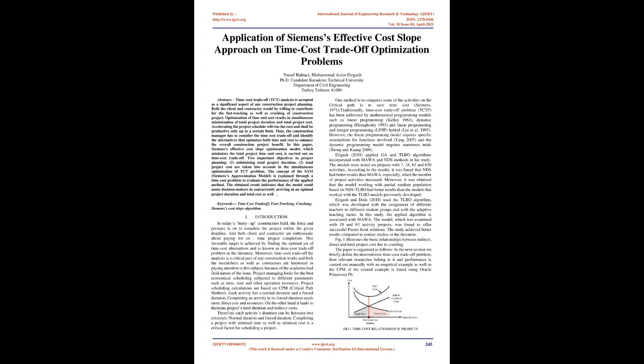Accelerating the project schedule will raise the cost and shall be productive only up to a certain limit. Thus, the construction manager has to consider the time-cost trade-off and identify the alternatives that optimize both time and cost to enhance the overall construction project benefit. In this paper, Siemens' effective cost-slope optimization model, which minimizes the total project time and cost, is carried out on time-cost trade-off — two important objectives in project planning.